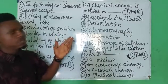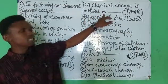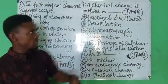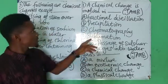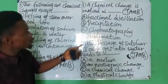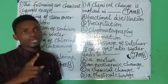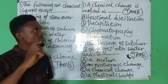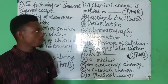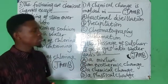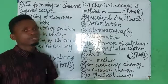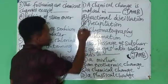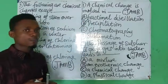The first one says a chemical change is involved in: A. fractional distillation, B. precipitation, C. chromatography, and D. sublimation. Sublimation is a physical change, so that is not the answer. Chromatography and fractional distillation are separation techniques. In fact, all of them are separation techniques. The one that is a chemical change here is definitely precipitation, whereby a solution is formed.